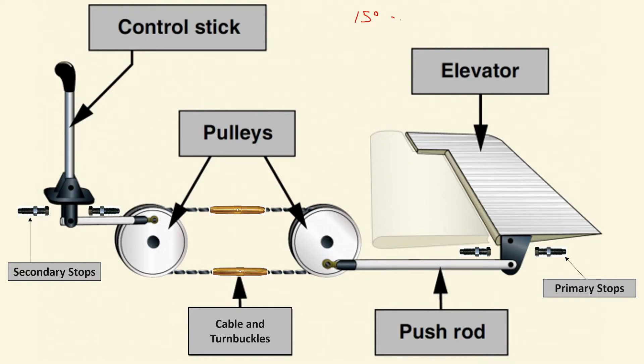Suppose your range is, let's just call it 15 degrees up and 20 degrees down. And I'm just pulling numbers out of the air here. And we find when we check our deflection we've got 14 degrees up and we've got 19 degrees down. So we need to adjust our deflection. We will do that by adjusting our primary stops until we get the deflection we need or the deflection that is required.